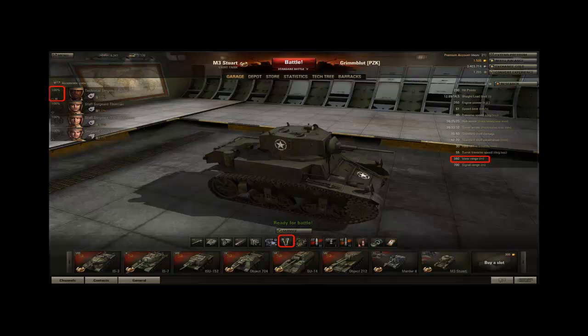If your commander only got a crew skill of 50%, then the effective view range of your tank is halved. If you drive around with a low-skilled commander and without a binocular or coated optics, you have to realize that your effective view range is only a fraction of the value given in your tank's details.